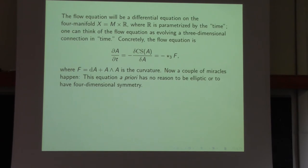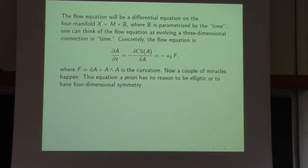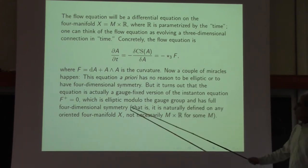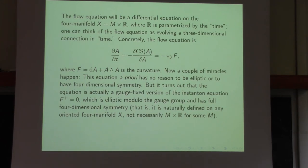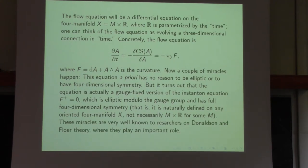The gradient flow equation turns out to be a gauge-theoretic version of the instanton equation — also known as the anti-self-dual Yang-Mills equation — which is an important equation in the physics of gauge theory and in mathematics. It's elliptic, acts modulo the gauge group, and has full four-dimensional symmetry: it's naturally defined on any oriented four-manifold, not just a product manifold. These are well-known miracles to researchers on Donaldson and Floer theory, where they play an important role.